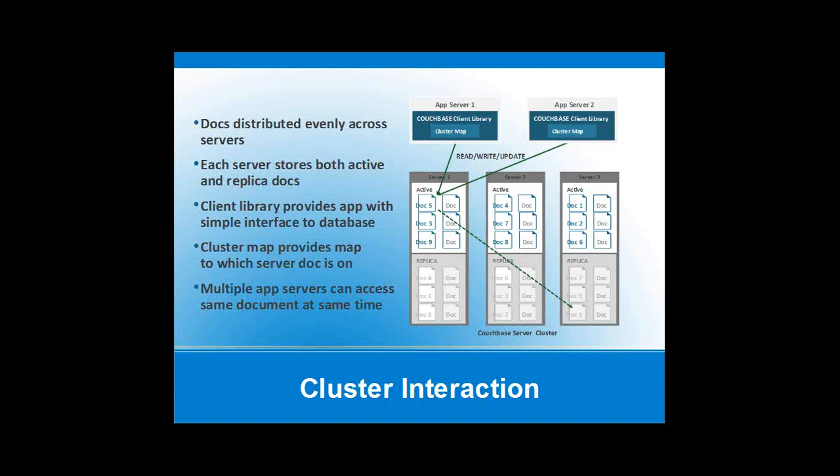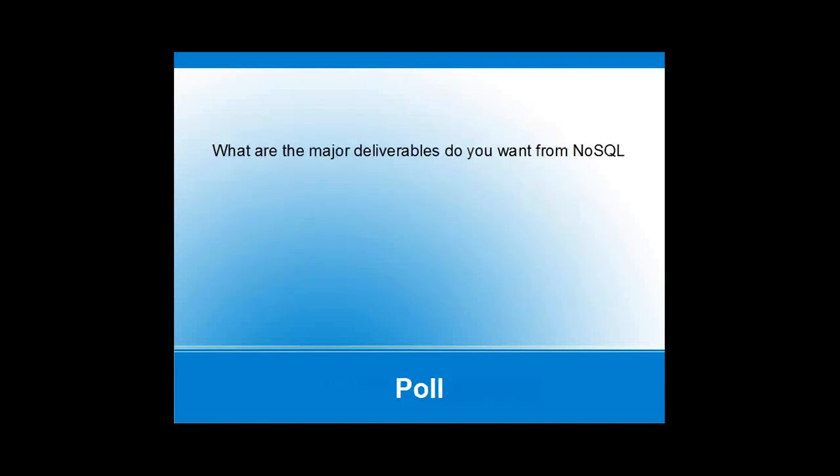Our client libraries provide a very simple interface — you're just doing gets and sets. You don't have to worry about any of the stuff going on behind the scenes. There's basically a map that each server keeps track of, saying which document is on which server, so they know where to go and get them.